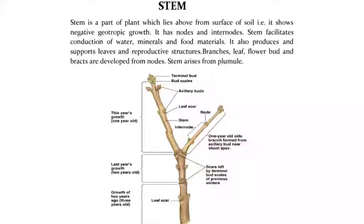Stem is a part of a plant which lies above the surface of soil, i.e., it shows negative geotropic growth. It has nodes and internodes. Stem facilitates conduction of water, minerals and food materials. It also produces and supports leaves and reproductive structures. Branches, leaf, flower bud and bracts are developed from nodes. Stem arises from the plumule.